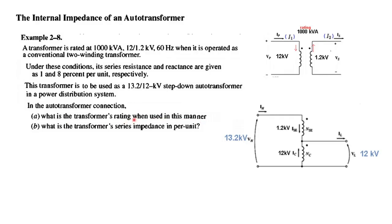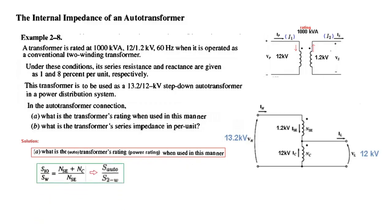We want to find S_auto. What is the transformer series impedance per unit? For S_auto, we've found this already and will follow the same technique. What is the autotransformer's power rating when used in this manner? We will go straight to this formula and plug in the values.